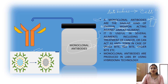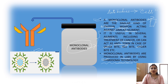Now we will see how these monoclonal antibodies are produced in the laboratory. These are produced by a technique known as hybridoma technology. We will try to understand what hybridoma technology actually is.